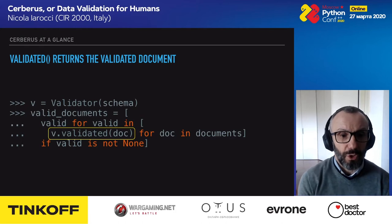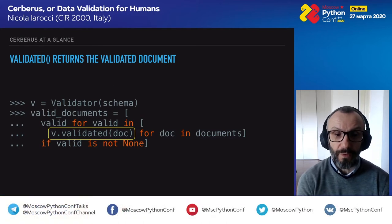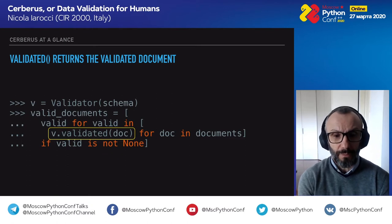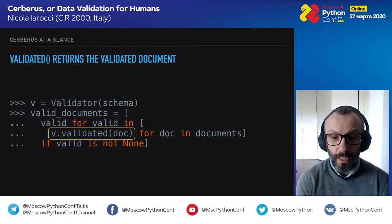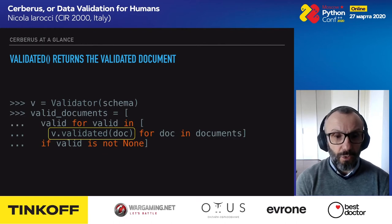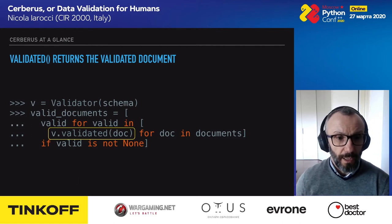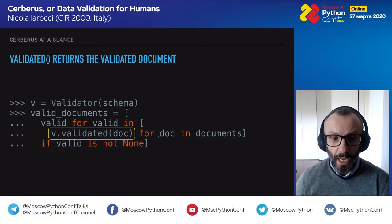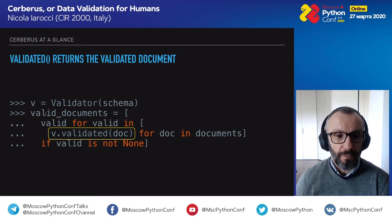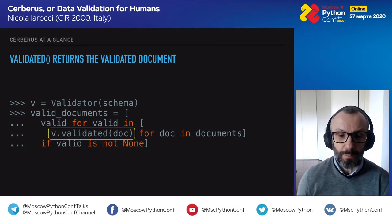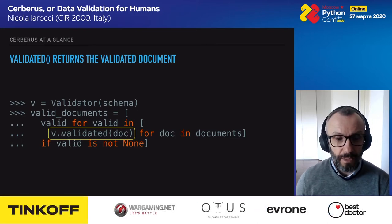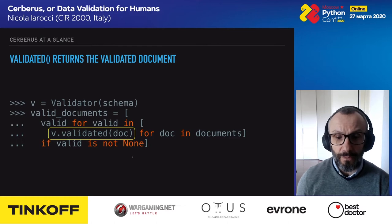There is also a validated method which returns the validated document if it is valid. This is very useful for filtering a list of documents: using a list comprehension, you submit a list of documents and select only the valid ones. Since validated returns the document only if it is valid, it's very easy and convenient to filter out invalid documents from a large list.